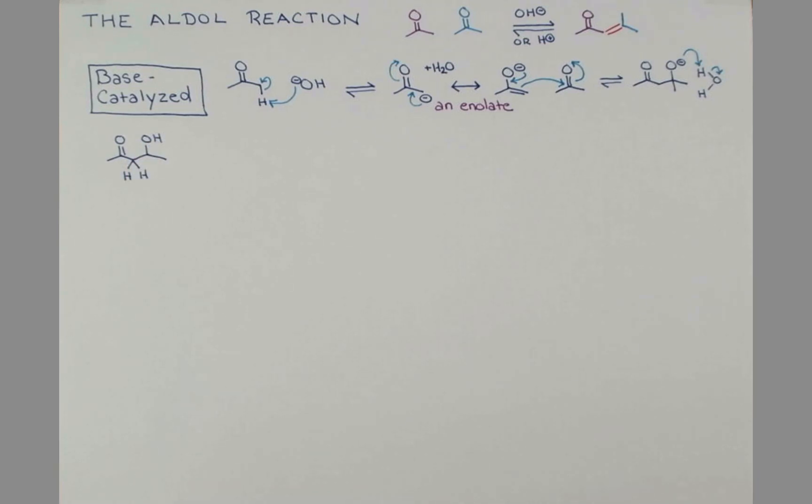Now, notice in our product, we don't have this OH. We have a double bond that results from elimination of this OH group. And you might be saying to yourself, OH- is a poor leaving group. The reaction that's going to happen next is an E1CB reaction. And this is how it works.